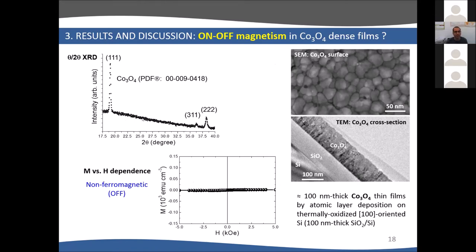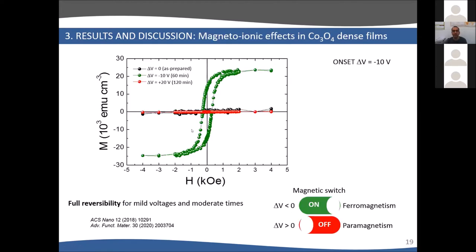Here in this slide, you can see the typical XRD of this material. It has this morphology from the top. In cross-section, you can see it grows columnar. The thickness of the cobalt oxide layer is about 100 nanometers. Initially, as expected, it is paramagnetic at room temperature. If we apply minus 10 volts for one hour, we can see you generate a ferromagnetic response. We go from an off-state, the black curve, to an on-state, the green curve. By applying plus 20 volts for two hours, you recover the initially off-state. This is very slow, but it shows the concept of switching on and off magnetism with voltage in a simple material, cobalt oxide.